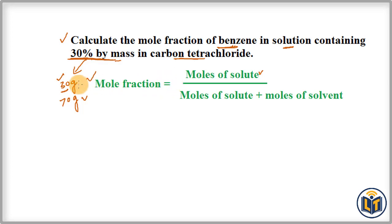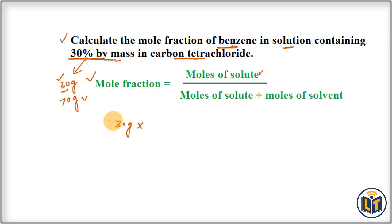To calculate mole fraction we need to know the moles of solute and solvent. That's why we convert mass of benzene and mass of carbon tetrachloride into moles. Here we have the mass of benzene as 30 grams, and we need the molar mass to convert mass into moles. The molar mass of benzene is 78.11 grams per mole.